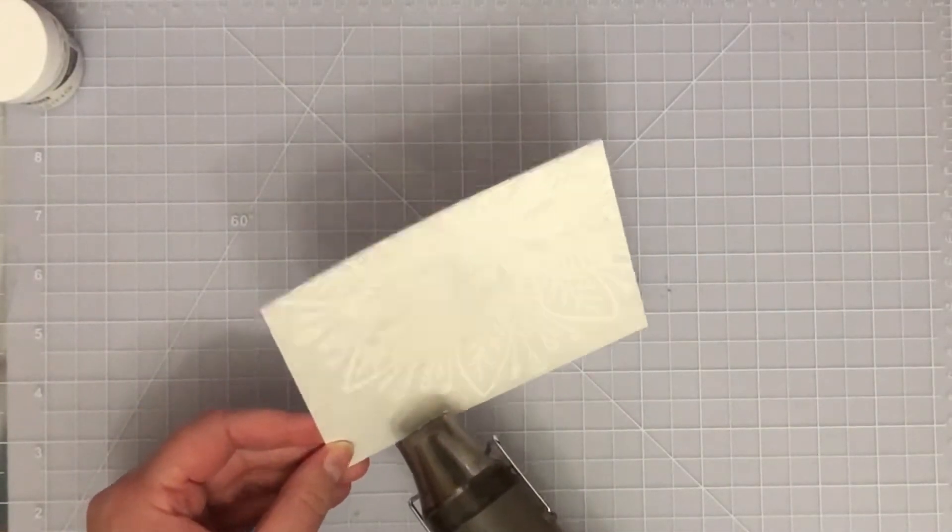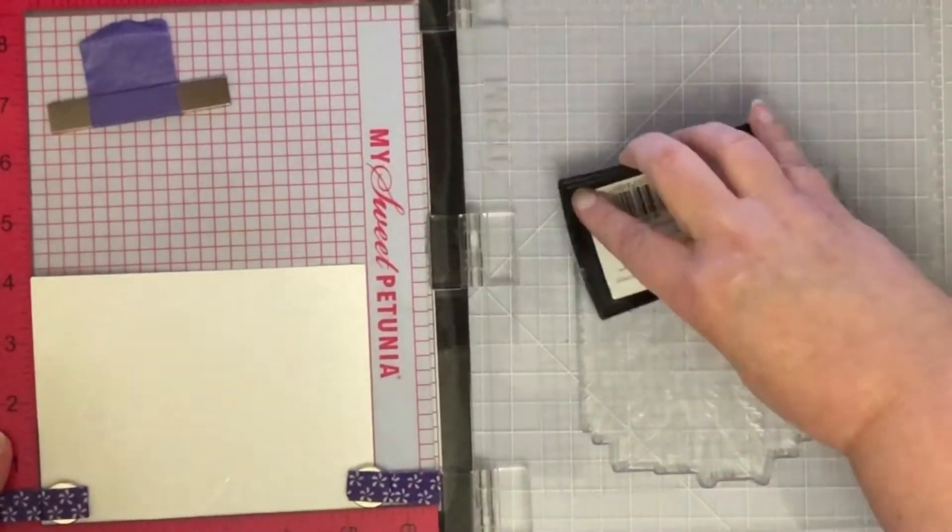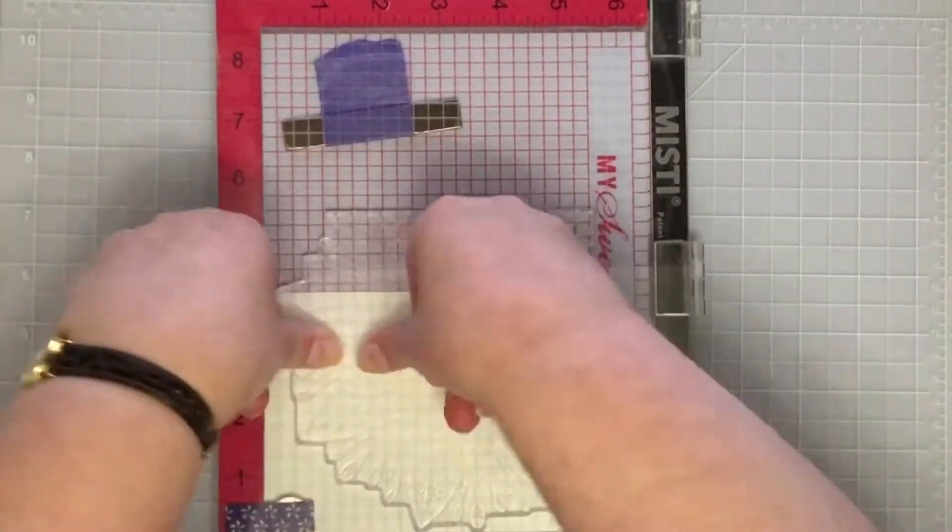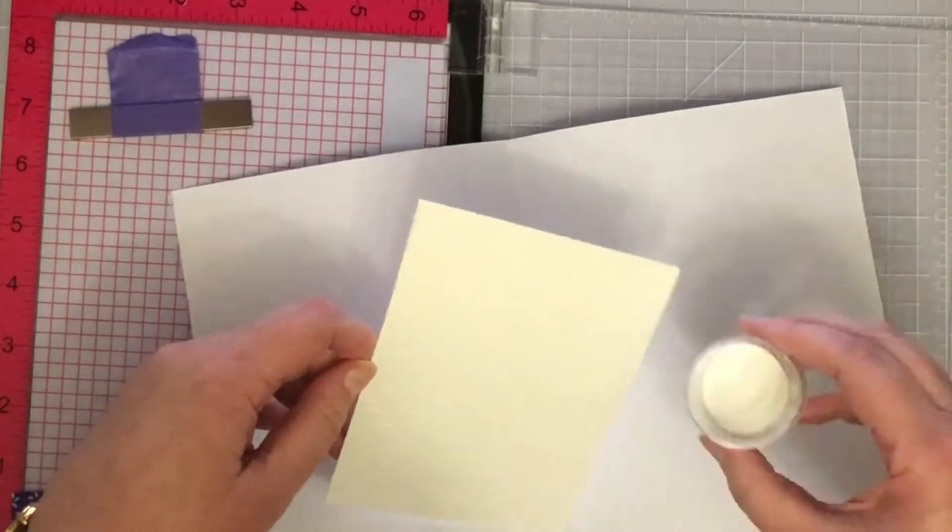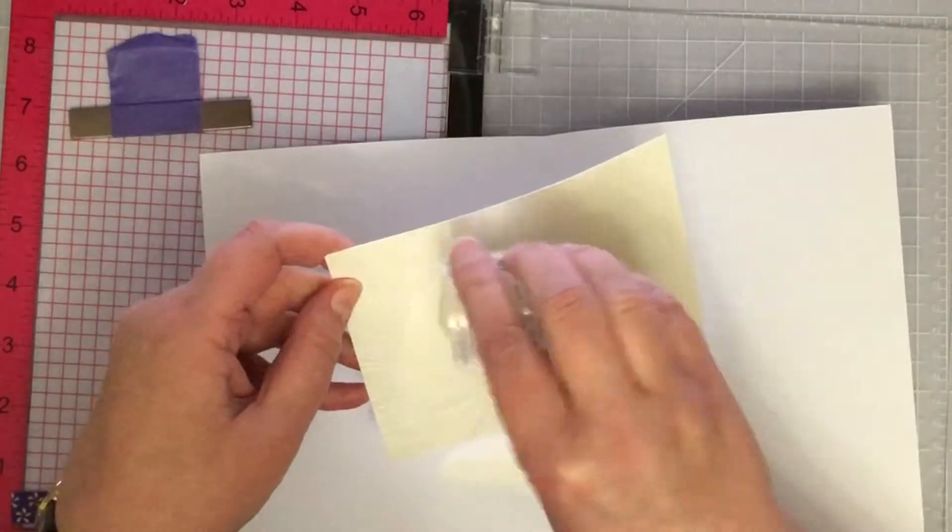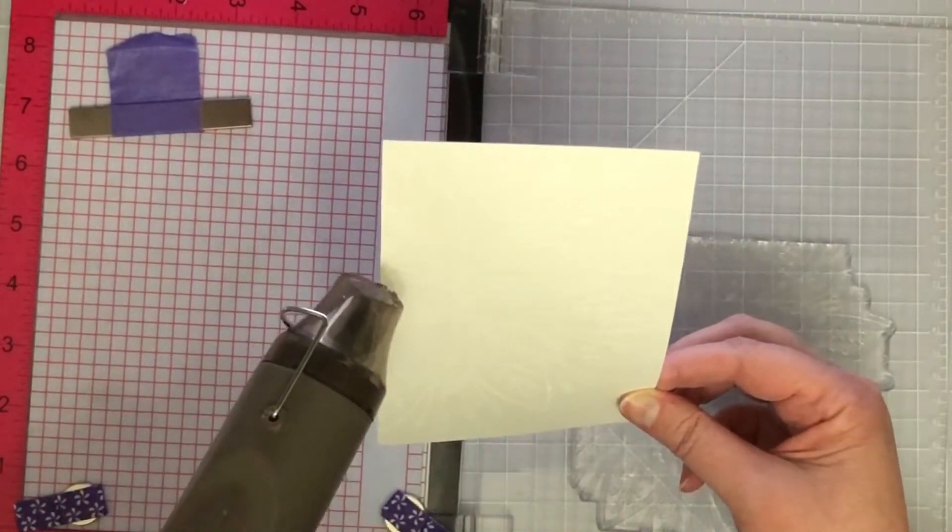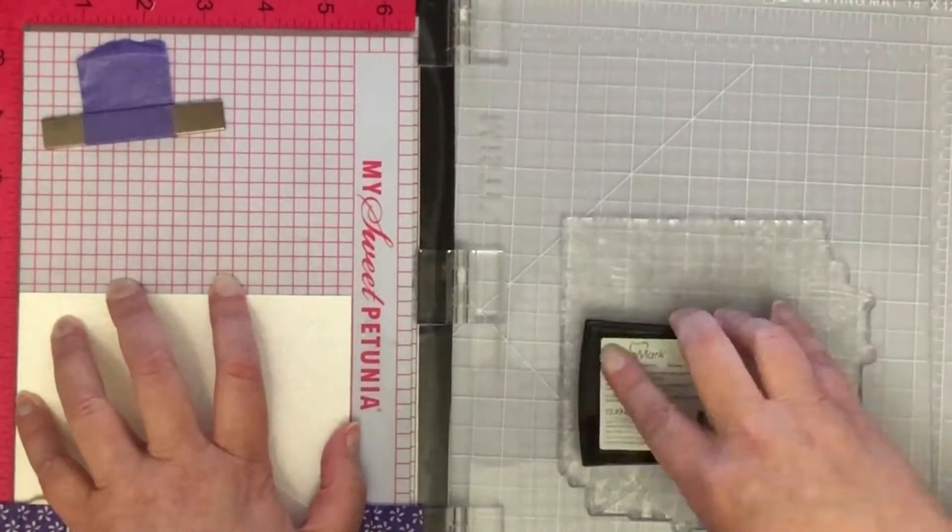That's okay because I planned to stamp over the top of my embossing and emboss again to get really thick embossing. I'm inking up my stamp one more time and paying particular attention to that area where it didn't stamp well the first time. I've got it the second time with really good coverage.